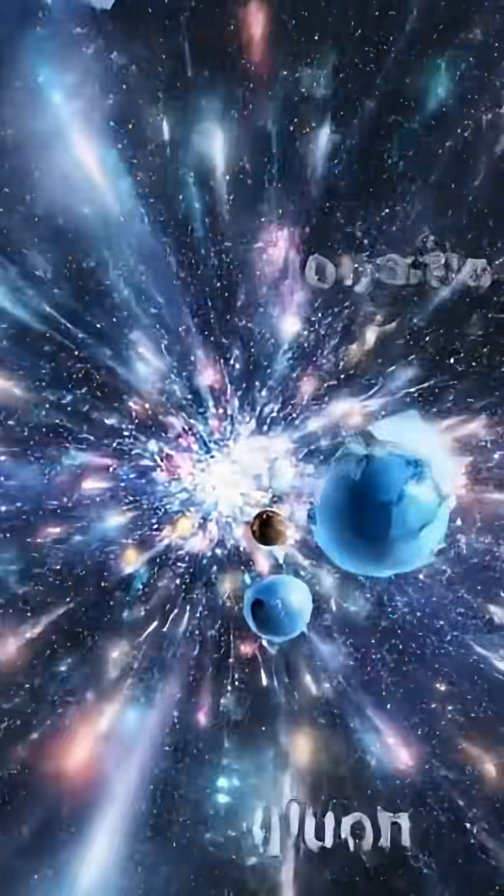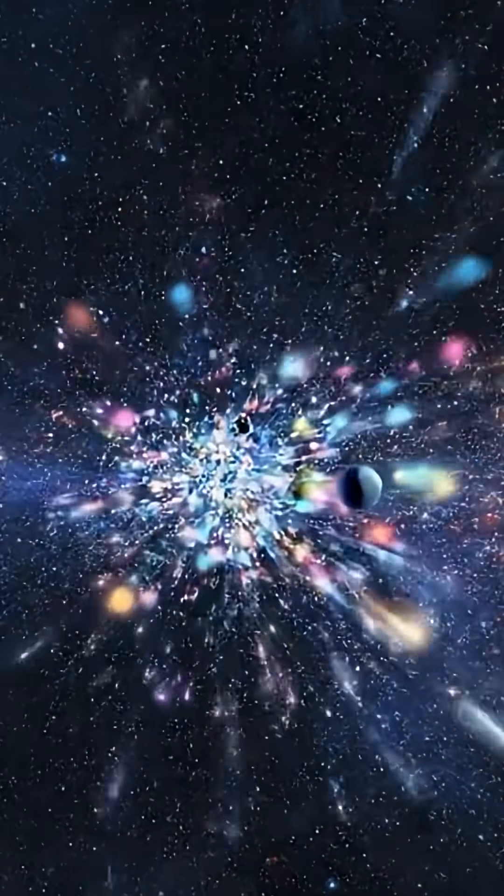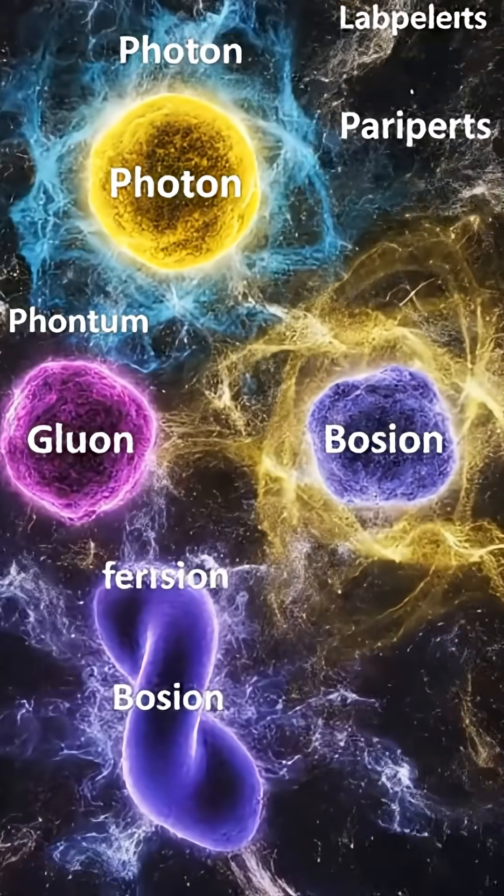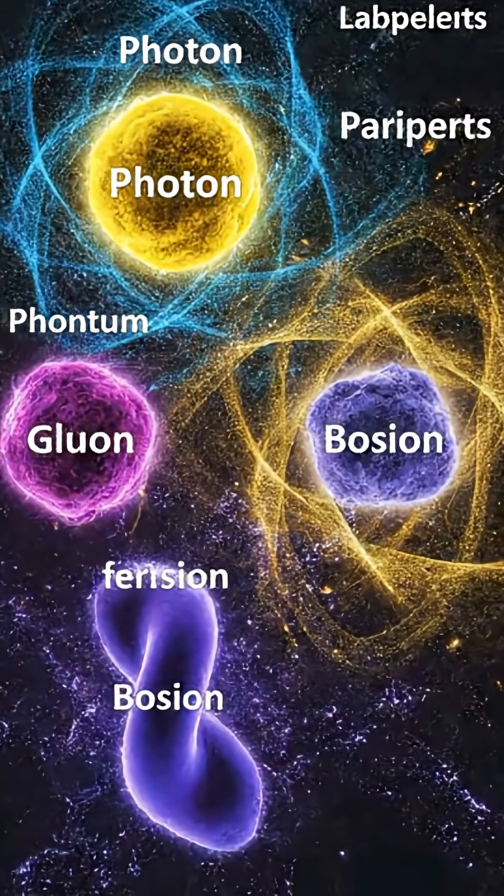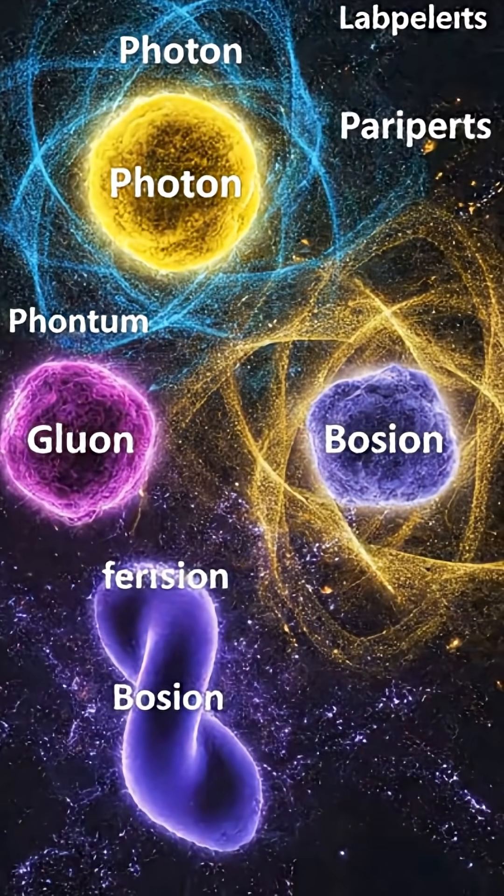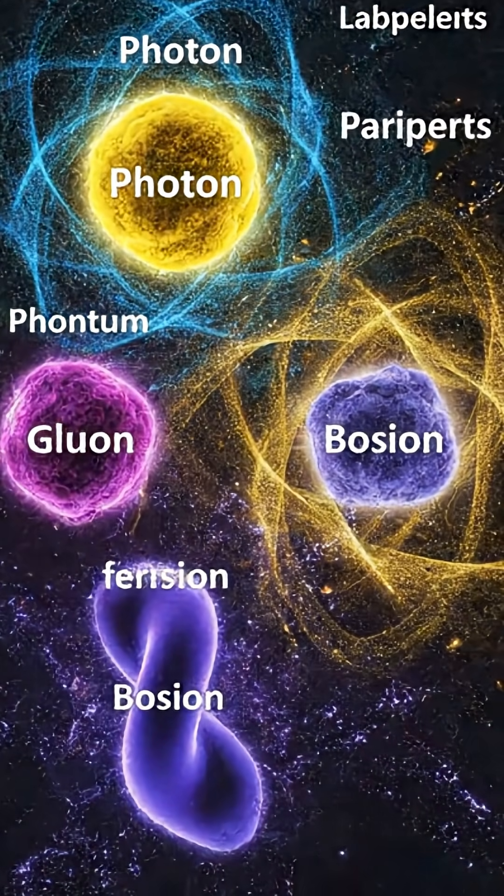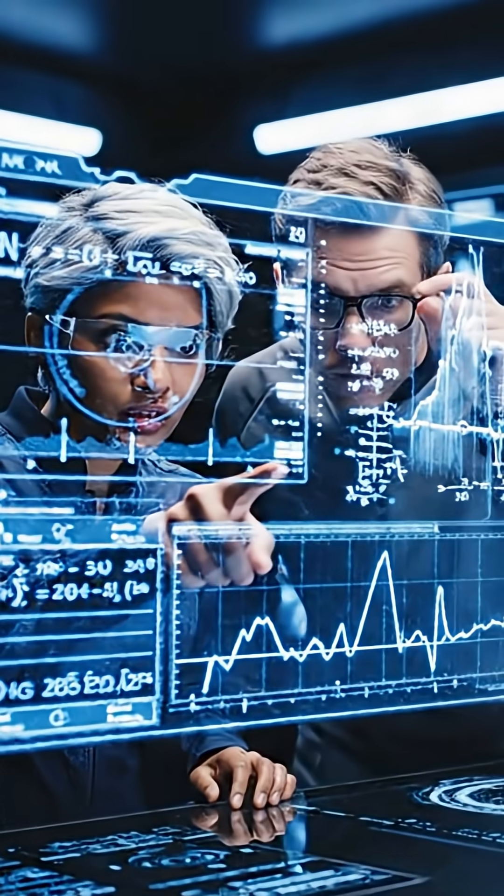In the quantum universe, forces are made by particles. Light has photons. The strong force? Gluons. The weak force? Bosons. So physicists wondered, where's the particle for gravity?